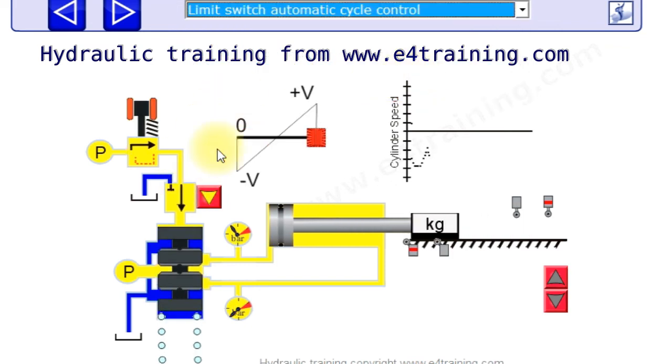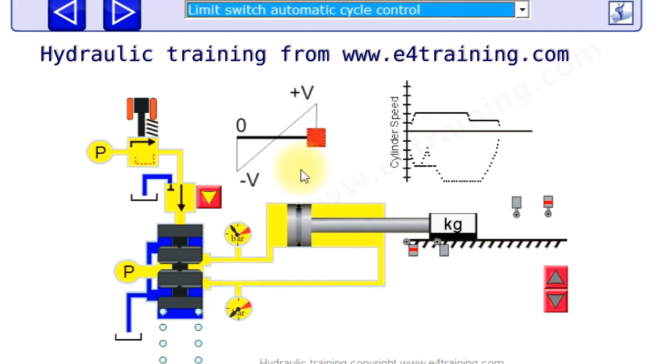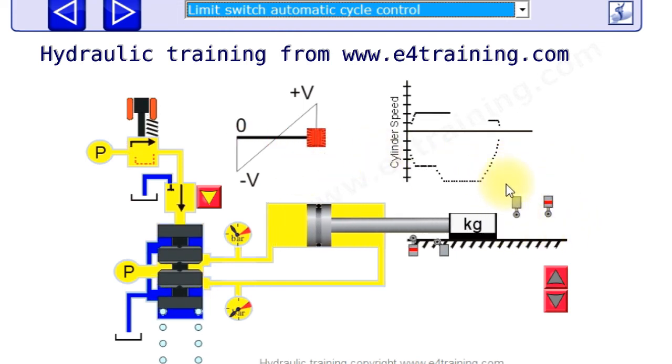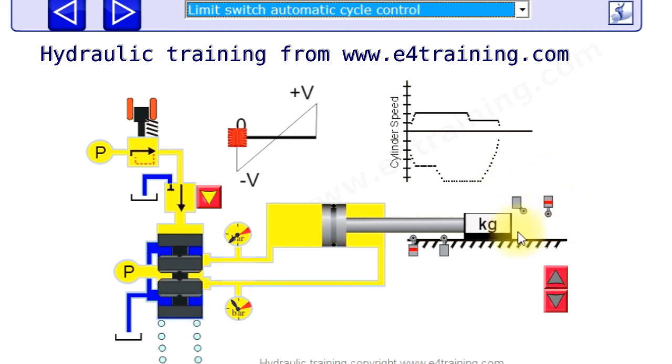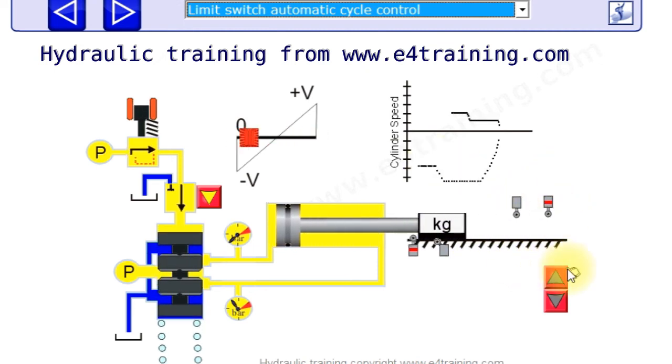Now there are lots of different ways of achieving this. We won't go through them all in this presentation, but now we've got a typical industrial proportional valve system. So we've got four limit switches and the reason for this is we always want to stop in the same place.